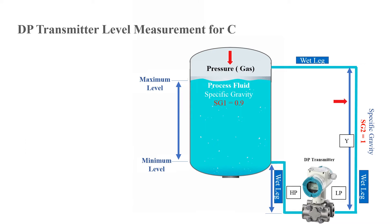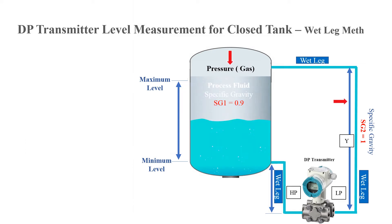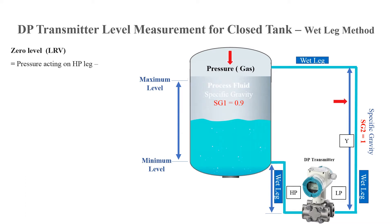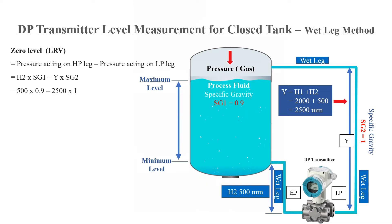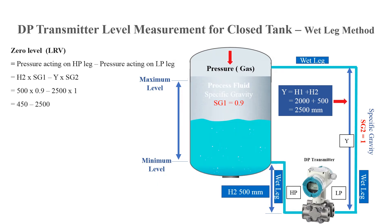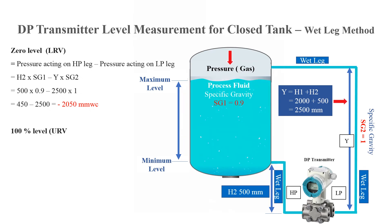DP transmitter level measurement for closed tank, wet leg method. The calculation of the DP transmitter in this case will be as follows: the lower range value equals pressure acting on the HP leg minus pressure acting on the LP leg — h2 multiplied by the specific gravity of the measured liquid inside the tank (sg1), minus y multiplied by the specific gravity of the liquid inside the wet leg on the low pressure side (sg2). The result will be minus 250 millimeter water column.